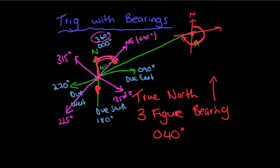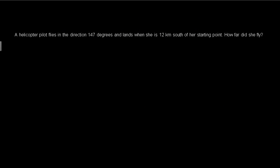Let's go into a question. The first question: a helicopter pilot flies in the direction 147 degrees and then lands when she's 12 kilometers south of her starting point. How far did she fly? We obviously need a starting point, but before I put my starting point on the page, I want to know what direction I'll be drawing my diagram. We're going 147 degrees — between 90 and 180 — so we're going in a south-easterly direction.